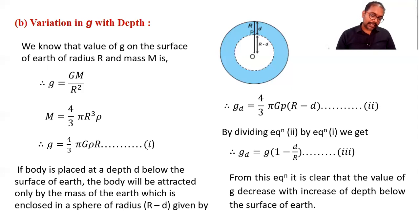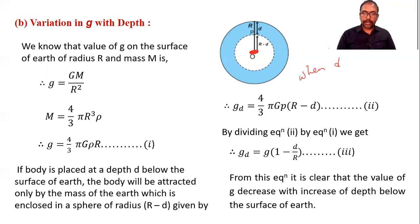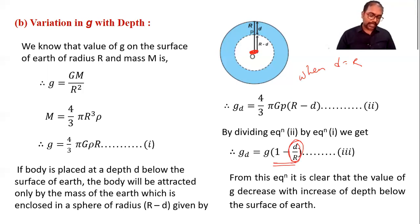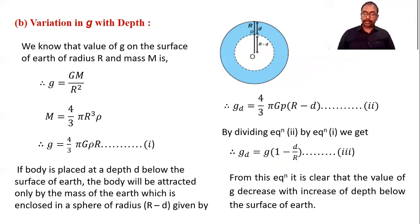At the center of the Earth, remember, the depth equals the radius. Substituting d = R into g_d = g(1 − d/R): we get 1 − R/R = 1 − 1 = 0, so g at the center is equal to zero. At the center of the Earth, acceleration due to gravity is zero.